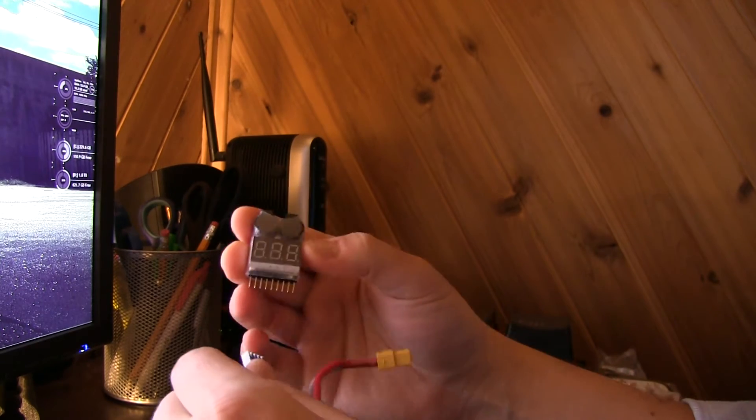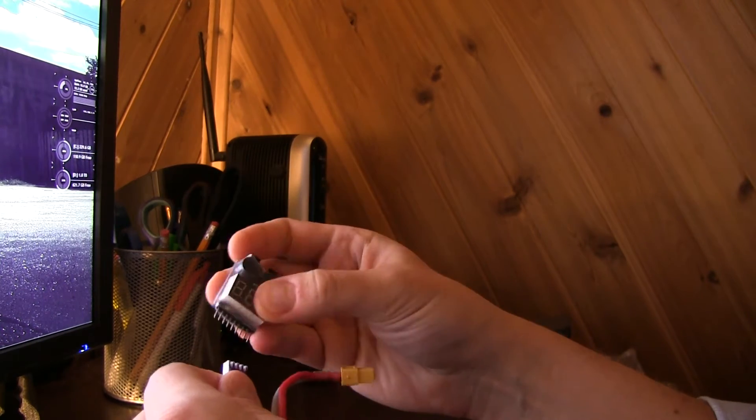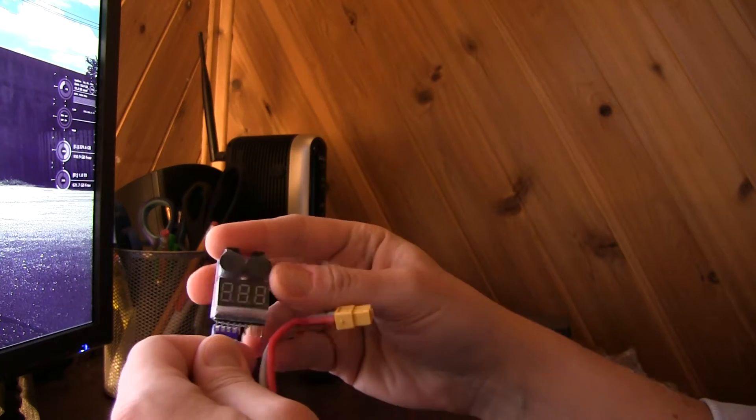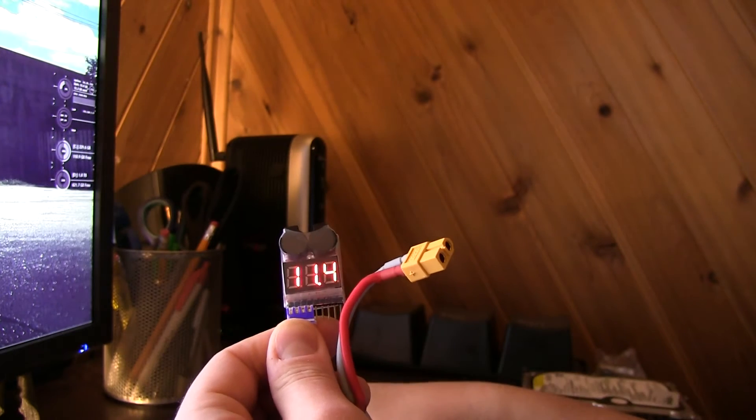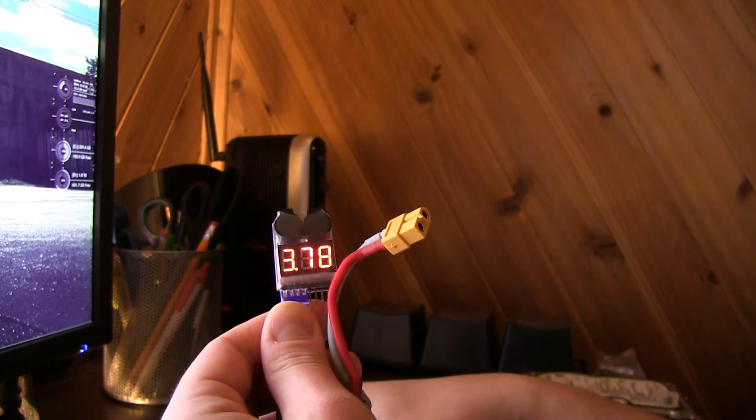I got this for less than $4 on eBay, brand new. Pretty simple how it works. You take your balancing cable, plug it in, and it cycles through all cells. This is a three cell battery in this case.